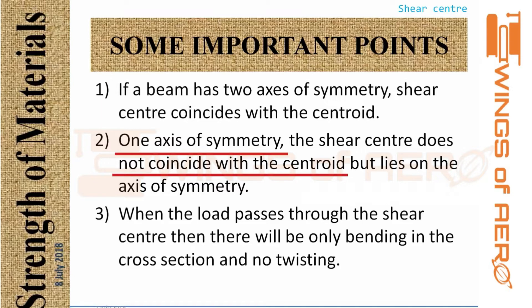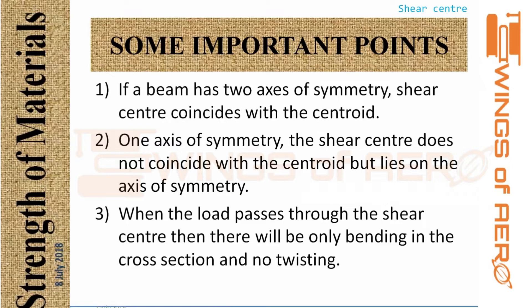The key trick: if there are two axes of symmetry, the shear center and centroid coincide at the same point. If there is only one axis of symmetry, they do not coincide, but the shear center still lies on that axis of symmetry. When a load passes through the shear center, there will be only bending in the cross-section with no twisting — as stated in the definition of the shear center.